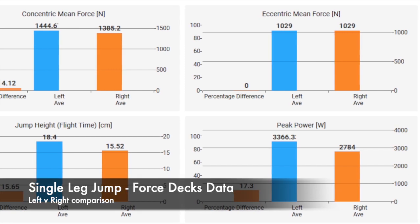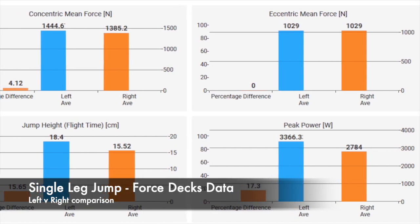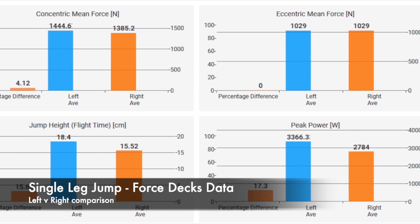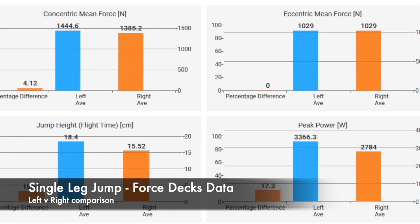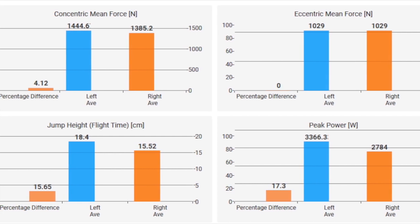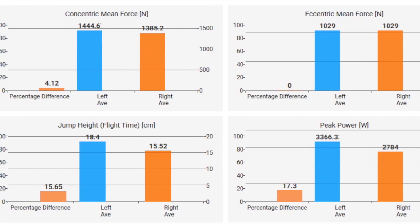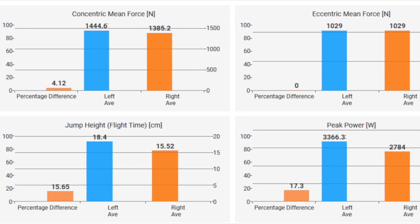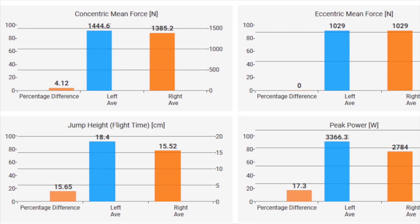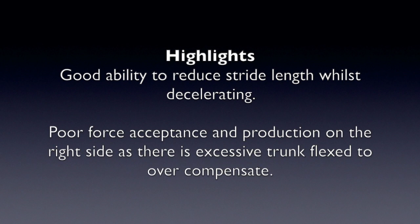During a single leg jump you can clearly see from the data that there is a deficit from left to right, which is significant when looking at jump height and peak power — both have above 15% discrepancy. Due to this discrepancy you can see that the athlete uses a suboptimal movement strategy in order to complete the task. The video highlights a good ability to reduce stride length while decelerating.